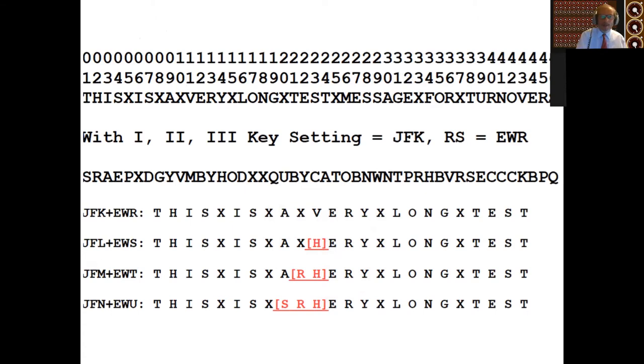So as it happens, if you have a rotor position of B with a ring setting of B, then that's equivalent to a rotor position of A with a ring setting of A, except for the fact that the turnover point changes with each stepping of the ring. So if I encrypt this very long test message for turnover testing, I'm using X for space because there's no space bar on the Enigma. This gets encrypted as that text that starts S-R-A-E-P-X-D and so on. Assuming I did that encryption with the rotor set to JFK and the rings set to E-W-R, then if I use JFK and E-W-R and type in the encrypted message, you get the original plain text. If I step on the rotors and the rings by one, there's one character wrong in the middle.